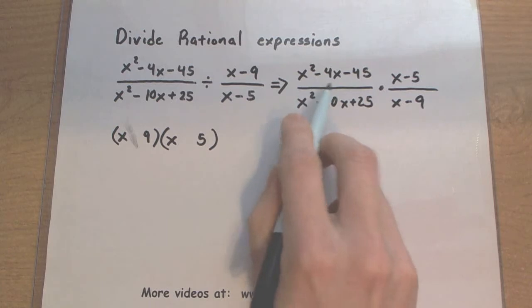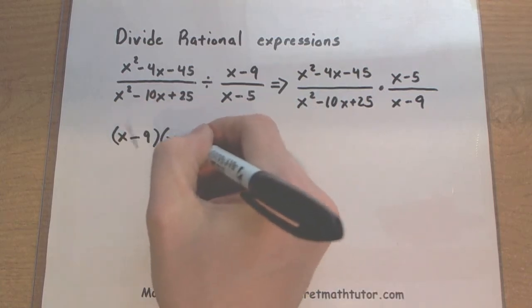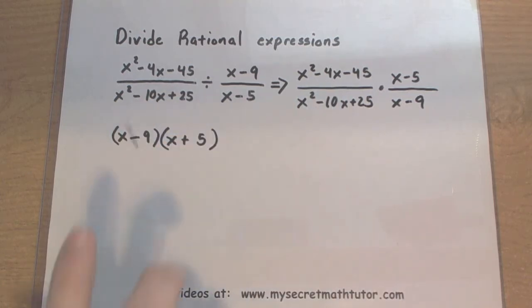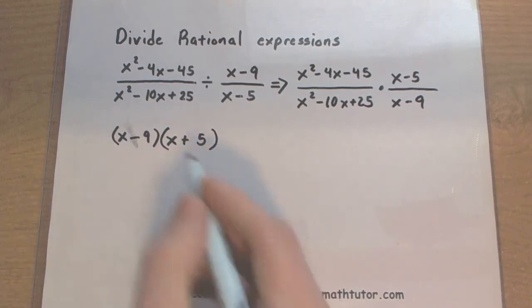And since my 4 is negative, I know that 9 better be negative. Let's double check that. Outside terms 5x, inside terms negative 9x. Looking good.